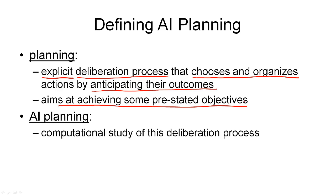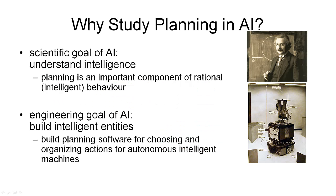Artificial intelligence planning is the computational study of this deliberation process. What we're interested in is the thinking about plans — the reasoning about actions that takes place when we are planning — and we are trying to build a computational model of this process. The goal of artificial intelligence is really twofold: there's a scientific goal and an engineering goal. The scientific goal of AI is to understand intelligence, and the key observation here is that planning is an important aspect of intelligent behavior. If we observe some intelligent behavior, we assume there is an underlying plan, and that this plan is the result of some planning. So to understand intelligence, we need to understand planning, which directly contributes to the scientific goal of AI.